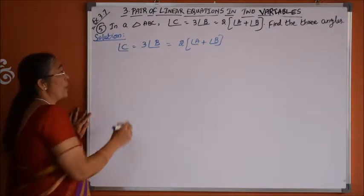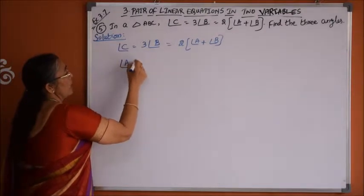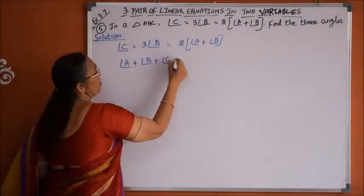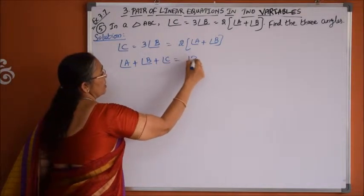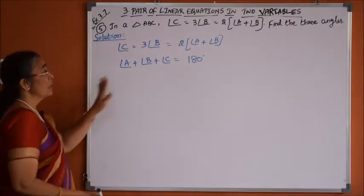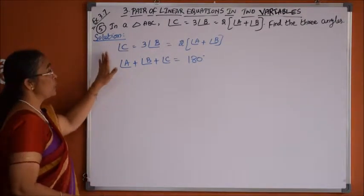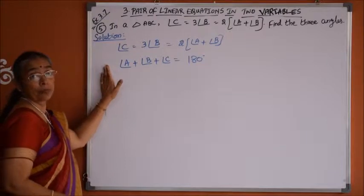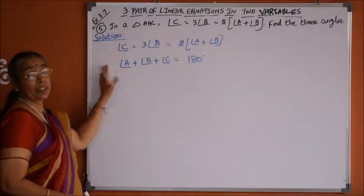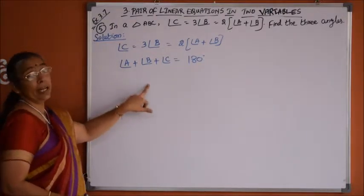We know one condition: the angle sum property — angle A plus angle B plus angle C is equals to 180 degrees. So using these 2 conditions, we will try to frame the linear equations in 2 variables, angle A and angle B.